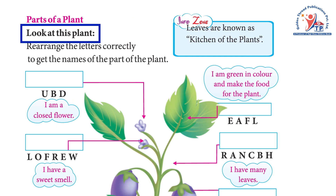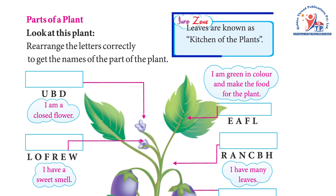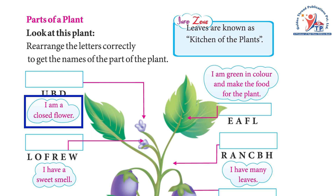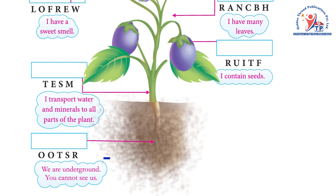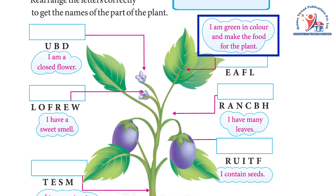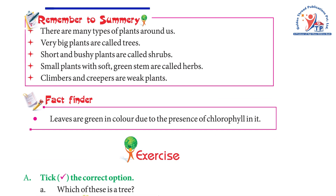Parts of a plant: look at this plant and rearrange the letters correctly to get the names of the parts. Info zone: leaves are known as the kitchen of the plant. I am a closed flower and I have a sweet smell. Roots transport water and minerals to all parts of the plant. We are underground — you cannot see us. I am green in color and make food for the plant.